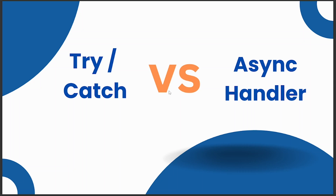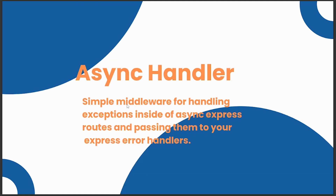Hello and welcome back to VA Tech Work. Today we are going to look at try/catch versus async handler. Try/catch and async handler are the ways of catching errors in your Node.js application. We are going to look at how we can transform code that uses try/catch to start using async handler. Async handler is a simple middleware for handling exceptions inside async Express routes and passing them to your Express error handlers.